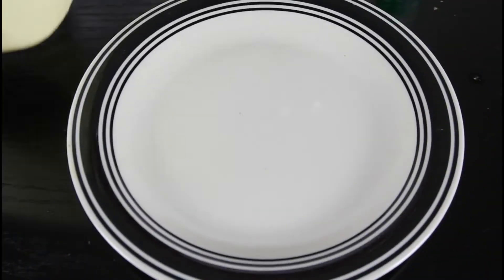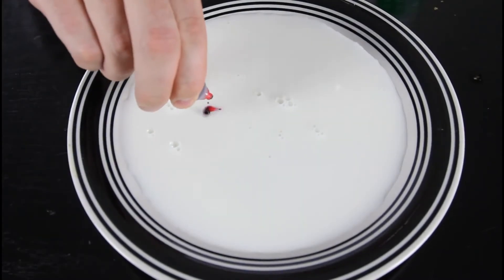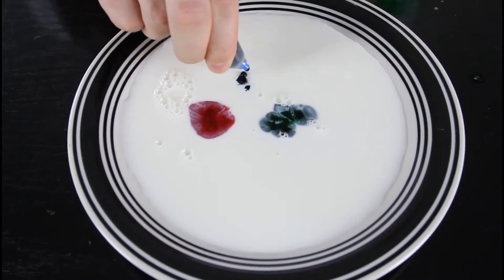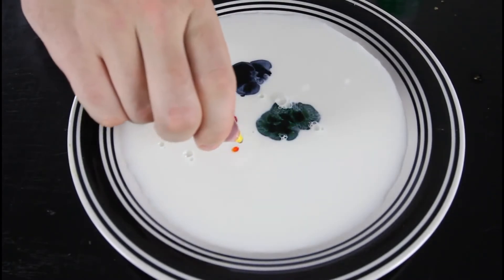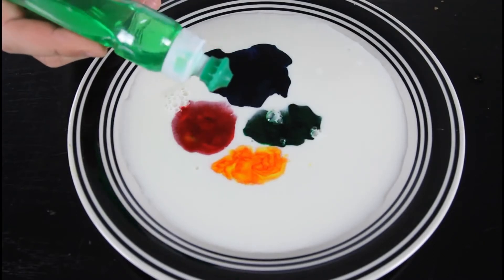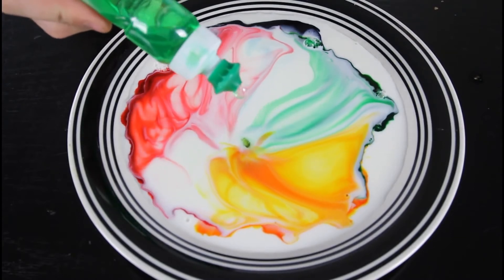For this cool experiment we're gonna drop some milk in a plate. Then we're gonna drop food coloring, couple drops over here, couple drops over here, and couple drops over here. Then we're gonna grab our soap and drop a small drop in there. Check it out. Isn't that cool?